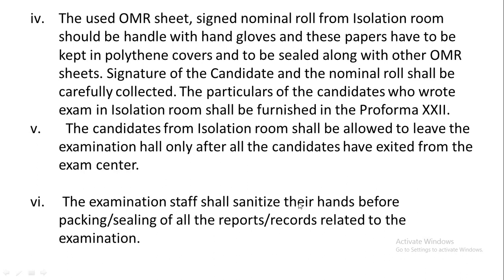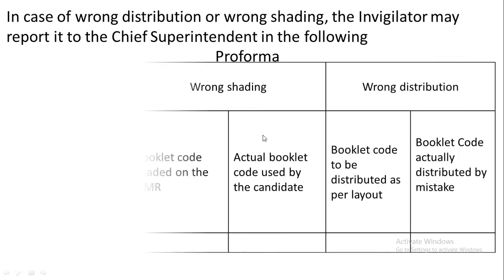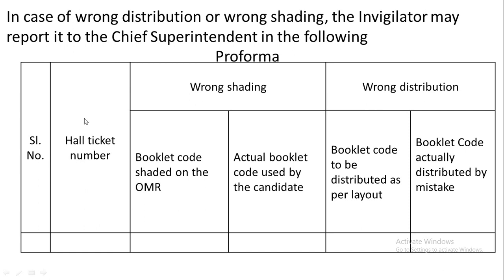The examination staff shall sanitize their hands before packing and sealing all reports related to the examination. In case of wrong distribution or wrong shading, the matter may be referred to the CS using the relevant pro forma — Serial Number, Hall Ticket — noting whether it is wrong shading or wrong distribution. Wrong shading is the mistake done by the candidate (booklet code shaded on OMR vs. actual booklet code used). Wrong distribution is the mistake done by the invigilator (booklet code to be distributed as per layout vs. booklet code actually distributed by mistake).